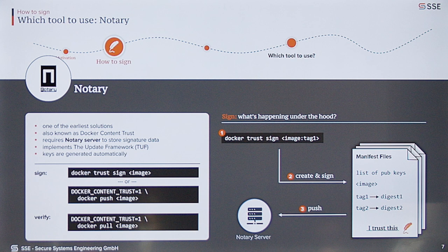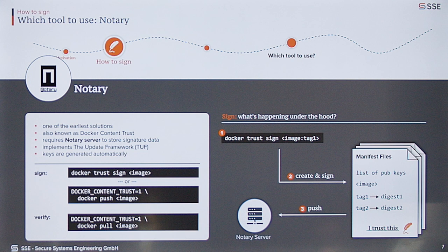So how do we actually sign? Pretty much simply by using your common Docker push command, with the exception that you have to set the Docker Content Trust environment variable to one. When you do that, everything in the background happens automatically. Internally, you create a bunch of keys that you use to sign a manifest file, which you also generate. This manifest file has a list of public keys, a reference to your image, and more importantly a mapping between the image tag you're trying to sign and the image digest that corresponds to the image. All these manifest files get signed with the generated keys and then pushed into the Notary server.